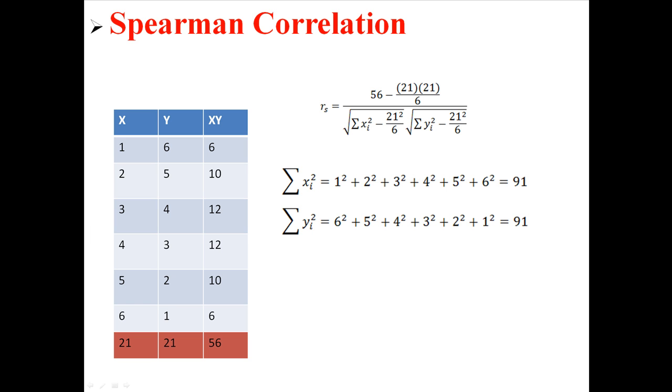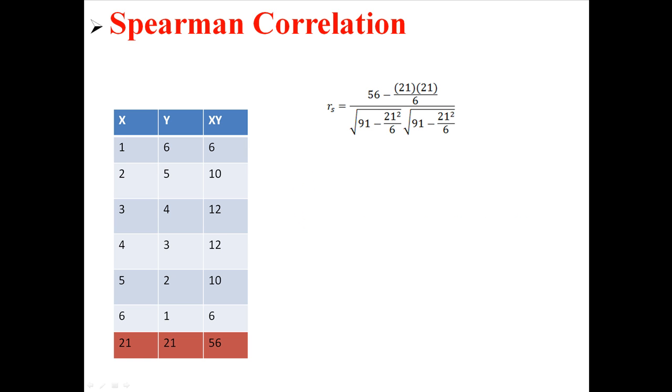So sum of all x squared is each individual x squared and then added together. And the same for y. It's just each individual y squared and then added together. So both of those add up to be 91. And we can put 91s into the equation.